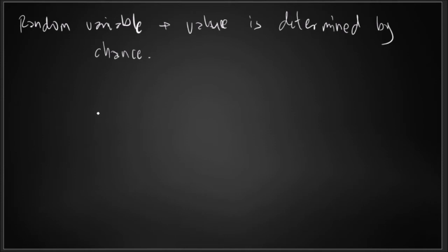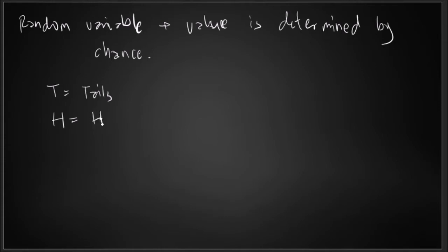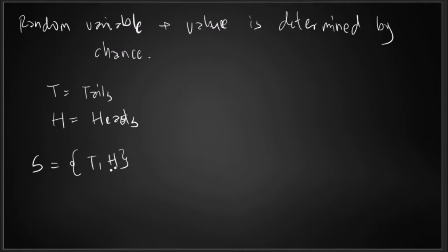For example, if I have a toss of a coin, so my experiment is a toss of a coin. I have a possible outcome of T, which stands for tails, and a possible outcome of H, which stands for heads. So my sample space will be tails and heads — that is a random variable.